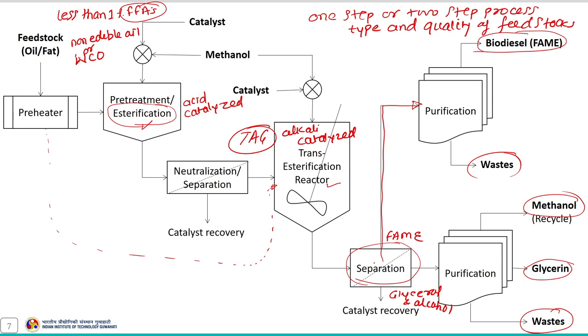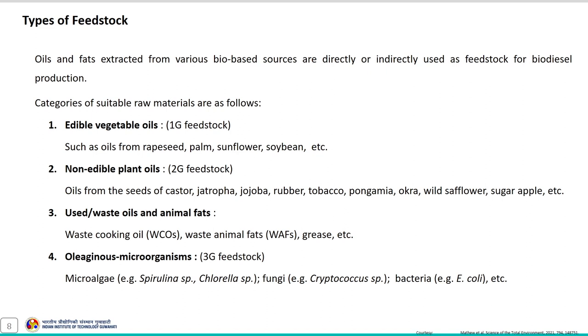The resultant product is allowed to separate into FAME and glycerol-alcohol phase, and the produced FAME is further purified to obtain biodiesel. Similarly, the glycerol-alcohol phase is purified to obtain glycerin and relatively pure methanol. Now let us discuss about the types of feedstock which are being used for the biodiesel production. Oils and fats extracted from various bio-based sources are directly or indirectly used as feedstock material for biodiesel synthesis.